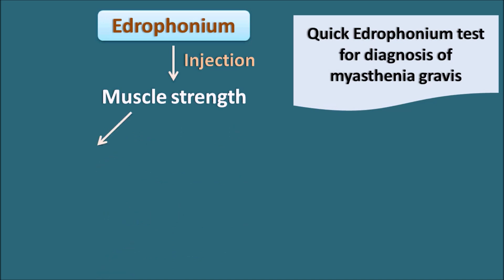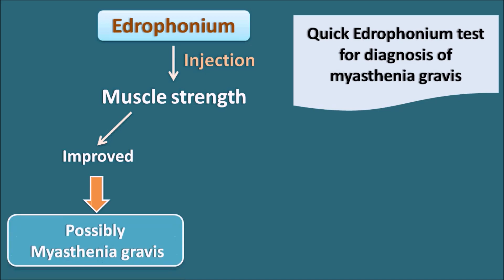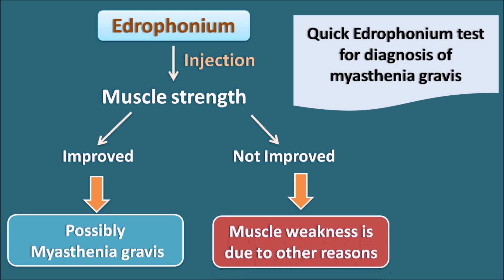If the muscle strength is improved, then the muscle weakness is possibly due to myasthenia gravis. If the muscle strength is not improved even after the injection of Edrophonium, then the muscle weakness may be due to any other reasons other than myasthenia gravis. In this way, Edrophonium injection can quickly diagnose whether the patient is suffering from myasthenia gravis or not.